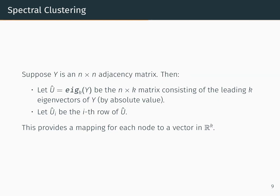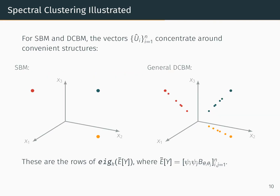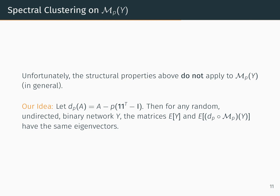To actually perform community detection, we're going to look closely at the method of spectral clustering. Let y be an n by n adjacency matrix. If we let û be the n by k matrix consisting of the leading k eigenvectors of y, and we look at the rows of û, this gives us a mapping for each node to a vector û_i in a low-dimensional Euclidean space R^k. For the models we're looking at, the vectors û_i concentrate around convenient structures. For SBM they should concentrate around k distinct points, and for general DCBM they should concentrate around rays that emanate from the origin. Unfortunately, while these convenient properties apply to the true SBM and DCBM networks, they do not in general apply to the synthetic networks that we get by randomly flipping edges.